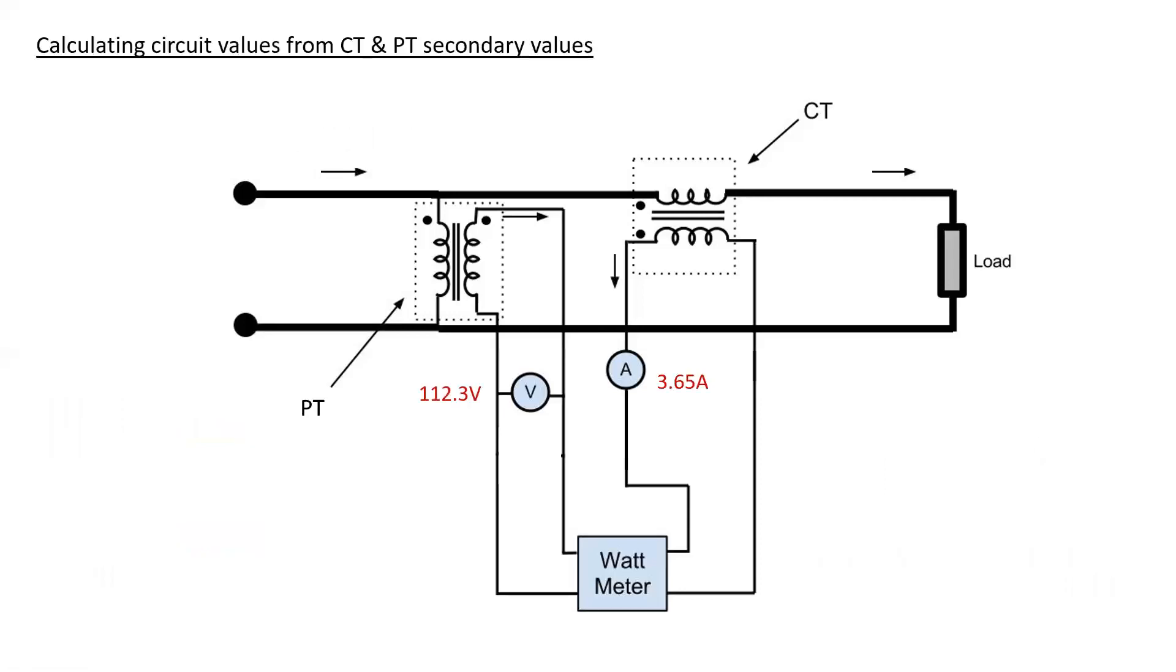Let's try another one. This time, what we're going to do is calculate circuit values from the CT and PT secondary values. So I have a voltmeter with 112.3 volts, and I have an ammeter with 3.65 amps. I'm using slightly different PT and CTs. So the PT is 4160 to 120, and the CT is 200 to 5. So let's break these down to their ratios. So the PT is 34.66 to 1, and the CT is 40 to 1.